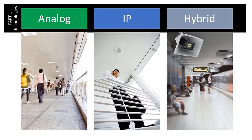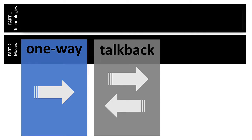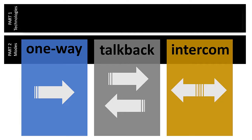In part one of the series we learned about three types of technologies that Valcom paging systems are built around. Here in part two we'll learn about the three modes that refer to the way that pages are delivered: one-way, talkback, and intercom.